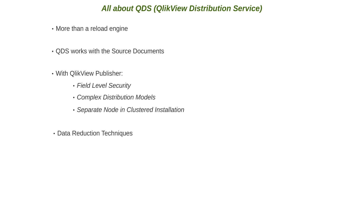Data reduction is a security mechanism that allows application data to be purged from a QlikView application in accordance with row-level security settings. QlikView Publisher can automate data reduction independently. Publisher performs the data reduction using the loop and reduce functionality in QlikView. The publisher data reduction should not be confused with the dynamic data reduction associated with section access.